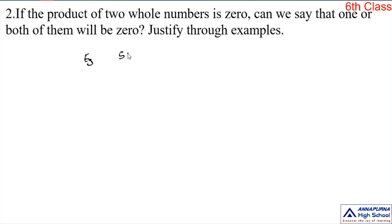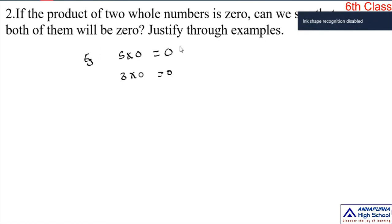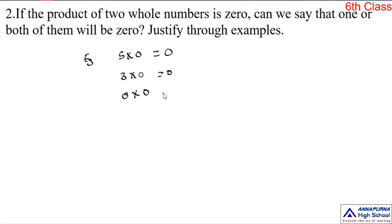One is a non-zero whole number and another is 0: 5 into 0 equals 0. Next, another non-zero whole number and 0: 3 into 0 equals 0. Then we take two 0s: 0 into 0 equals 0. We observe these three examples — 0 with any multiplication is 0.